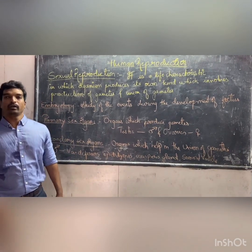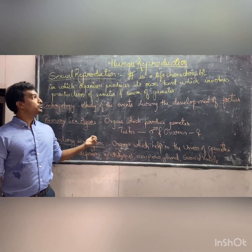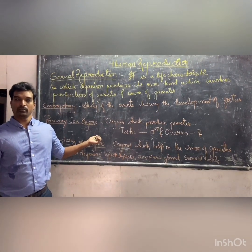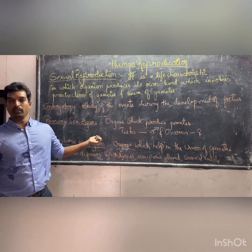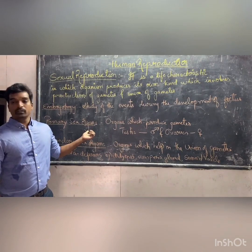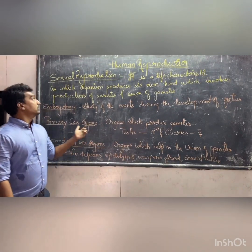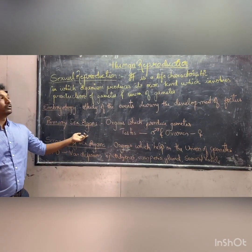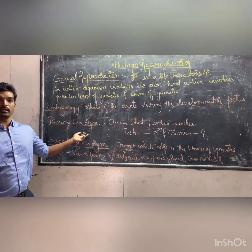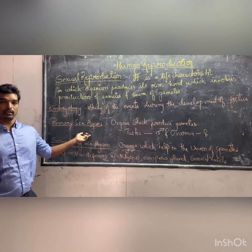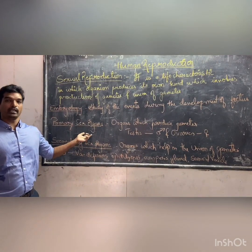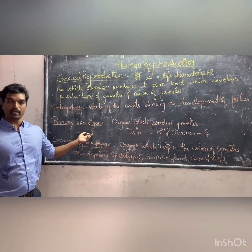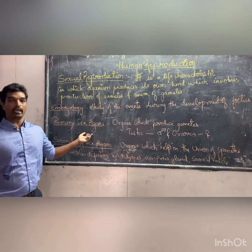Welcome everyone. Today I am going to teach you about human reproduction from the second POC, first unit, from the Zoology background. In sexual reproduction, there are several events taking place in humans, starting with the production of gametes, transfer of gametes, fertilization, and development of the fetus.